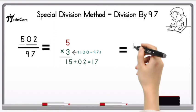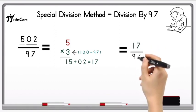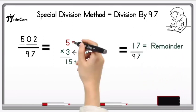Now take this 17 in the next step and divide it by 97. But it is not possible because 17 is less than 97. So this 17 is a remainder and 5 is the quotient.